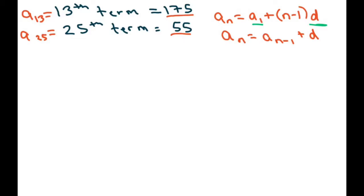So we know the 13th term equals a sub 1 plus n. Our n is 13 here, so it's going to be 13 minus 1 times d. That means our 13th term, 175, equals a sub 1 plus 12d.